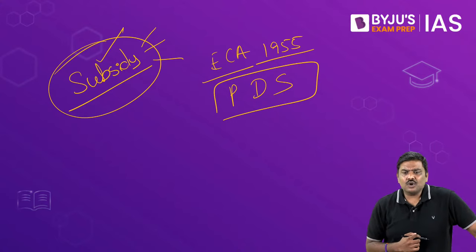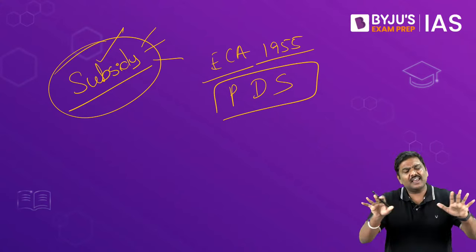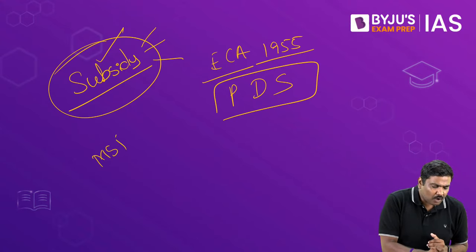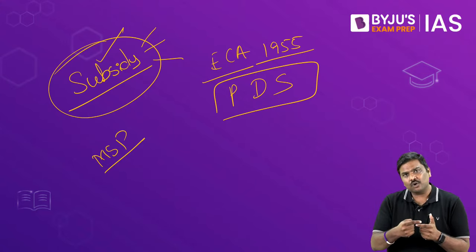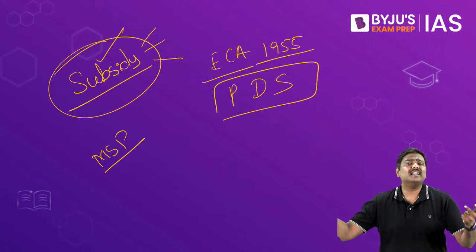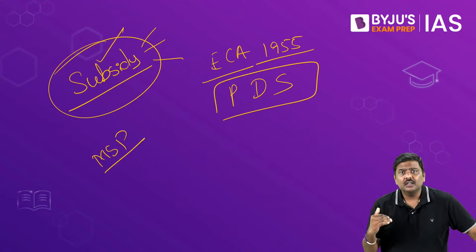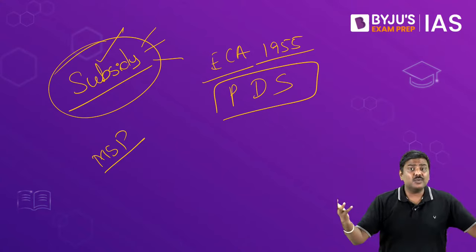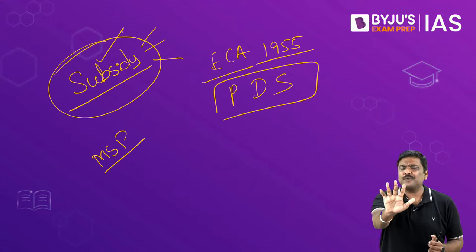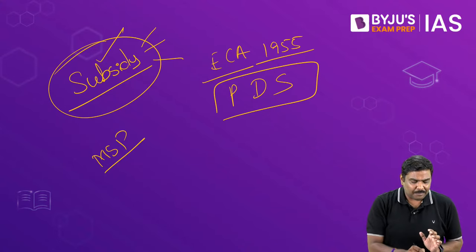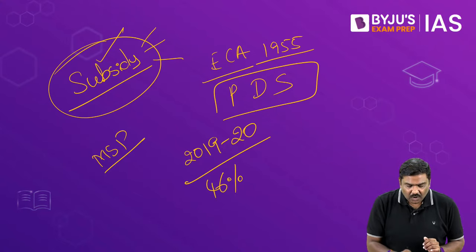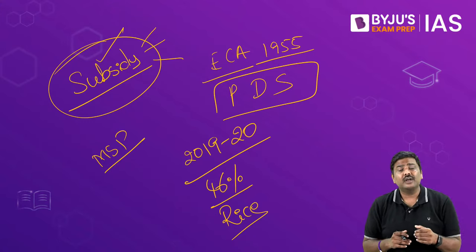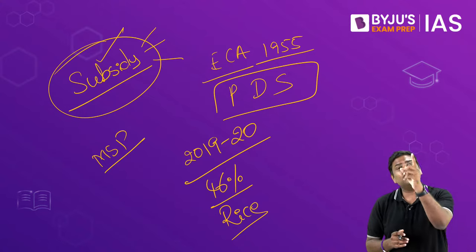Why is MSP not reaching villages? MSP is announced by the government, but it is entirely up to the farmers to decide whether they want to sell the crop at MSP to the government or sell it to anybody else in the market. If market prices are higher, a farmer will sell in the open market. Second, although MSP is announced, all crops are not procured — in 2019–20, around 46% of rice produced was procured, around 36–37% of wheat, 12% of coarse grains, and only 1% of oilseeds.